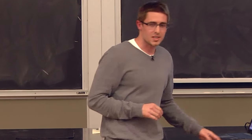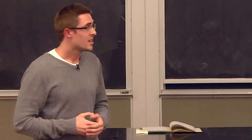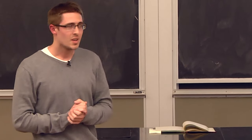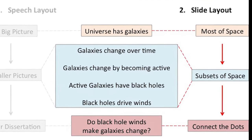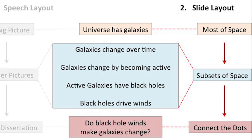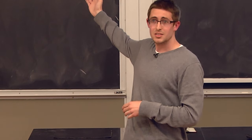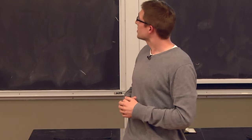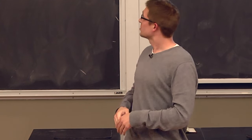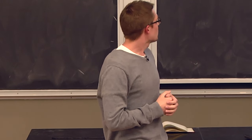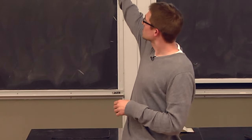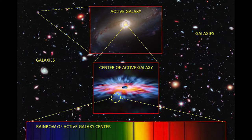The second thing, very related to the first, is how do you make the slide — what do you put on it and how do you make it match what you're trying to say? I took the same approach: start with the big idea, then think of smaller ideas to go from the big idea to the dissertation. In the example, the big picture is the universe has a bunch of galaxies, and if you look at the slide, you see a bunch of galaxies in the background taking up most of the space, placing a large emphasis on the big idea.